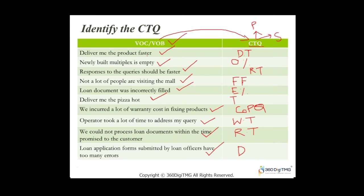'Deliver me the product faster' — delivery time is my primary CTQ. But in the course of reducing delivery time, it should not happen that I hire 10 additional resources and bring about improvement by consuming a lot of cost — that increases cost, which is not the objective of Six Sigma. We need to try to maintain cost constant while reducing delivery time, or even decrease cost alongside decreasing delivery time. This cost is called the secondary CTQ.